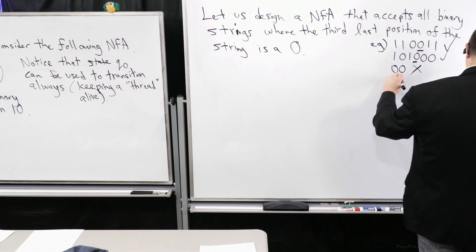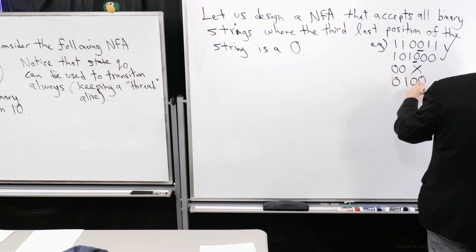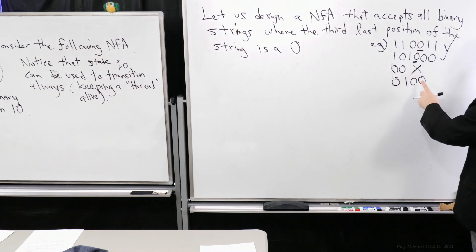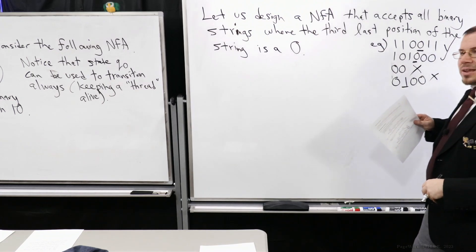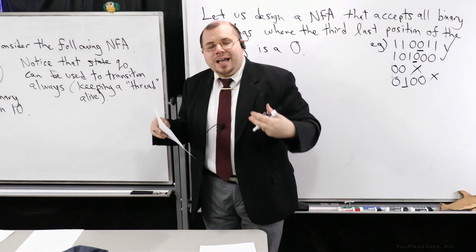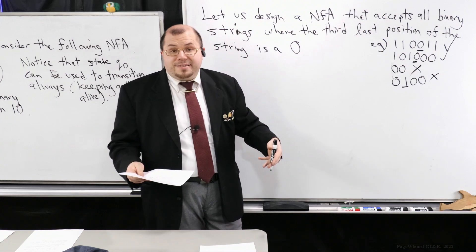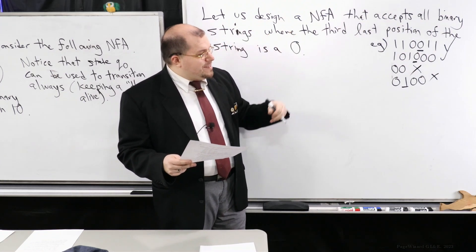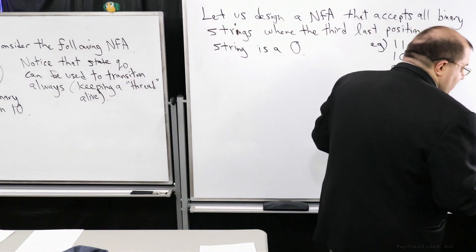How about 0, 1, 0, 0? Well, it certainly has enough symbols in it. Well, let's look, last position, second last position, third last position. It's a 1. No, we should reject that one. So let's pick up the idea we had about producing more guesses to help us design an NFA in this case.